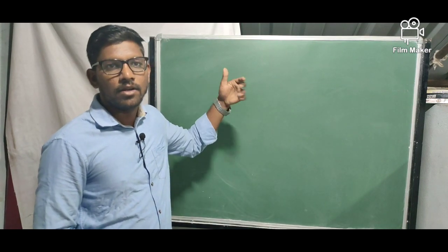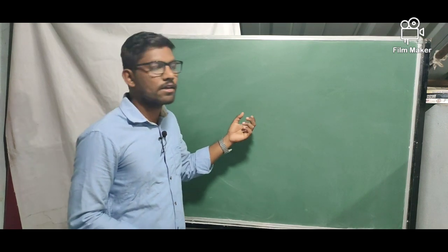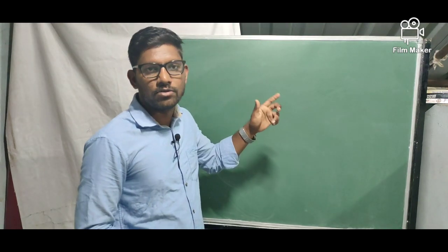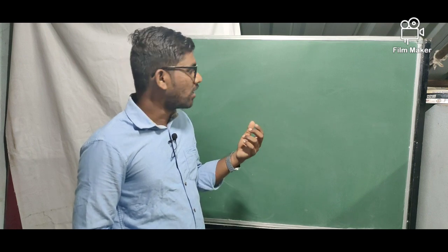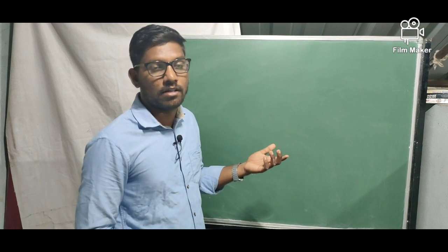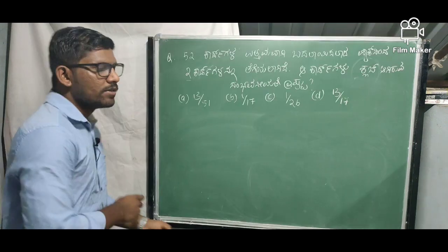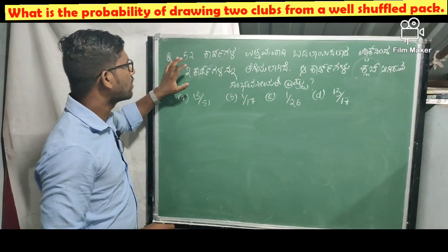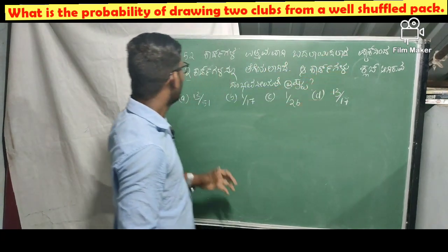We will show you the next question. We will show you the first question and the next question. We will use the formula for n factorial divided by r factorial. We will show you the first round of Shubhai Narayasita.